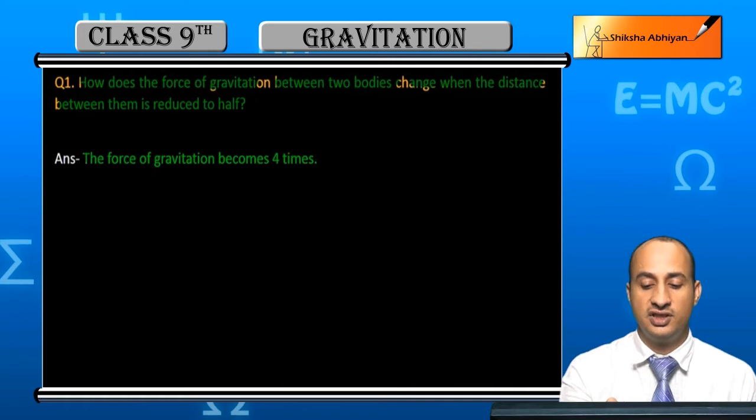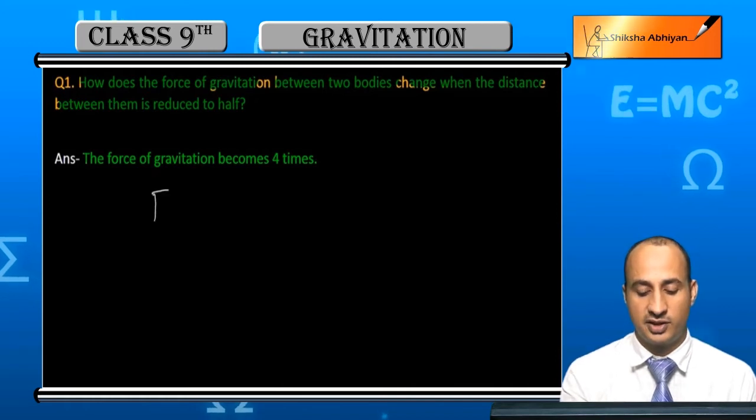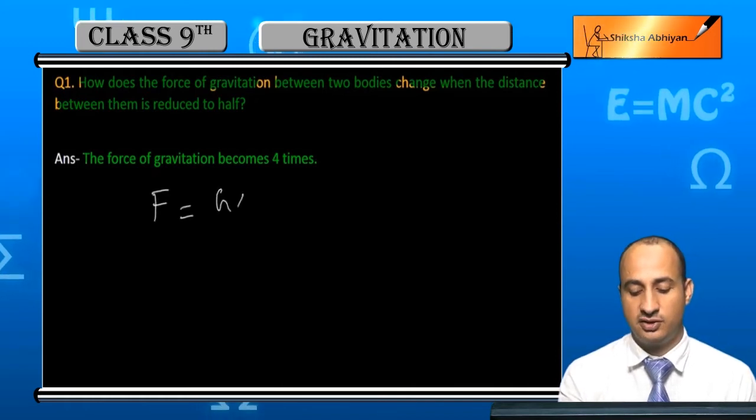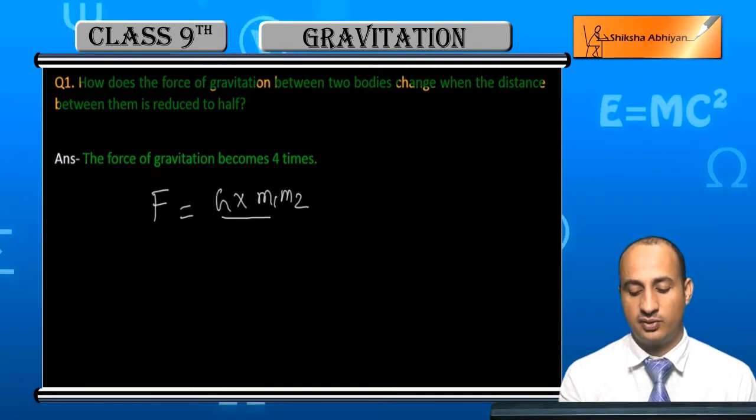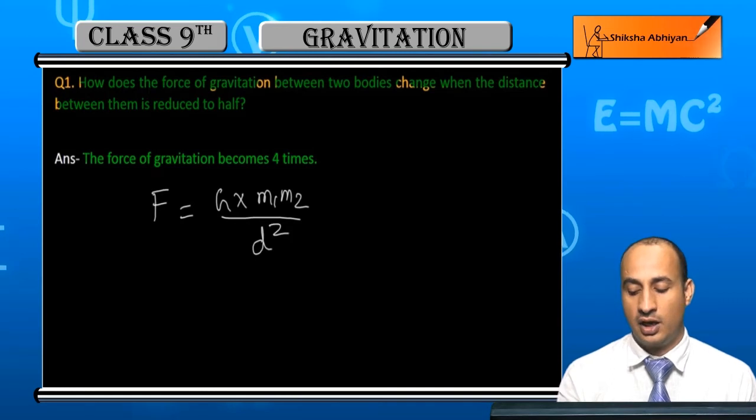Distance between the two bodies is reduced to half, so in this case, what will the force here be? F equals G times the product of the masses, if we take M1 and M2 upon the distance between them, D squared.